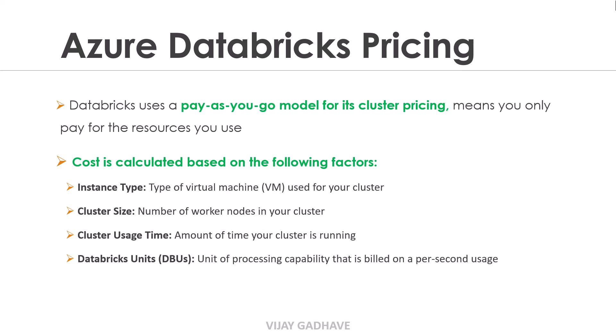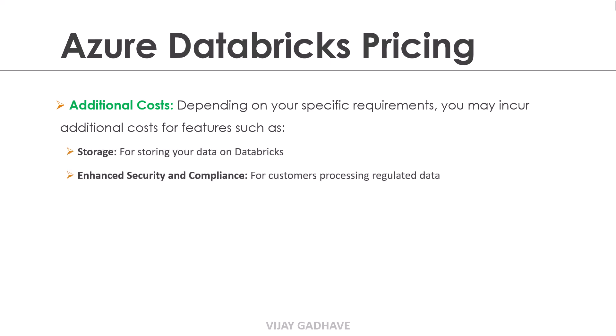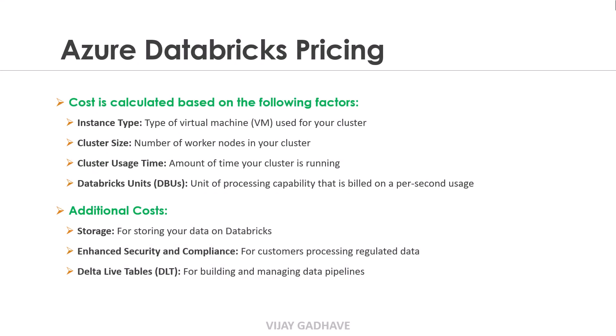The cost is calculated based on these four factors, plus one more: additional costs. Depending on your specific requirements, you may incur additional costs for features such as storage — for storing your data on Databricks — enhanced security and compliance for customers processing regulated data, and Delta Live Tables for building and managing data pipelines.